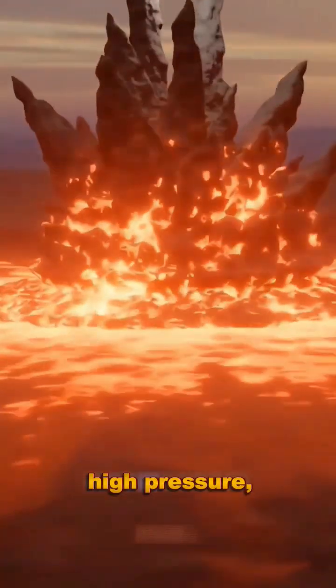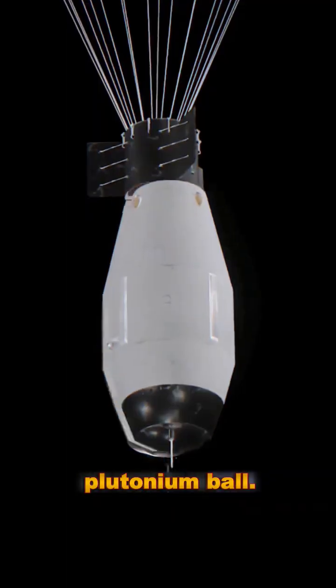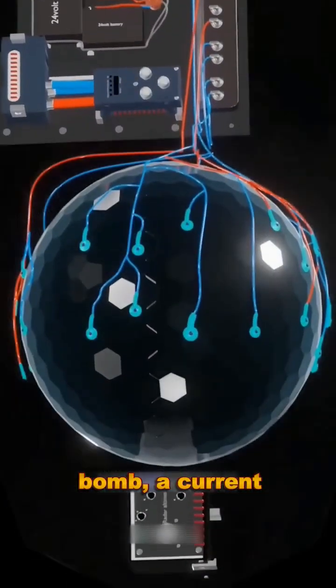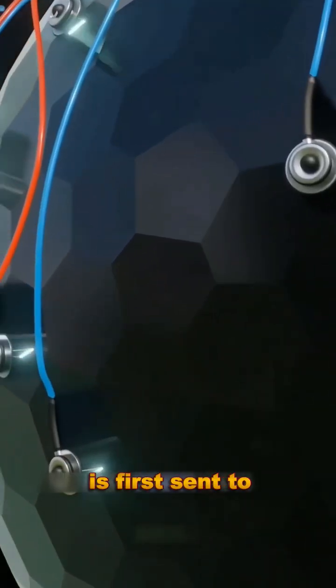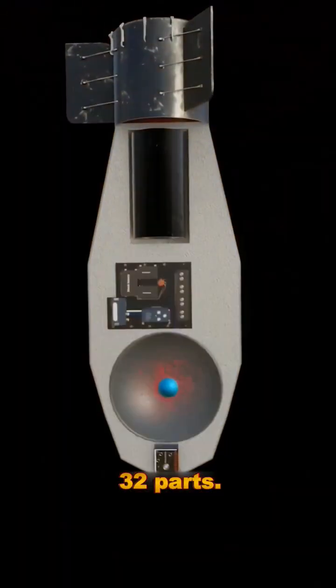To create such high pressure, layers of RDX and cyanide are coated on the plutonium ball. To start the nuclear bomb, a current of 5,000 volts is first sent to the detonator, after which it is divided into 32 parts.